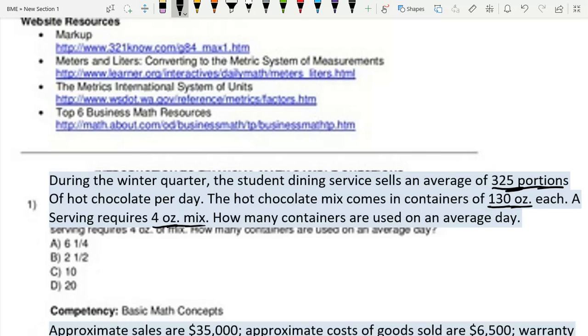Now back to the math. The hot chocolate mix comes in containers of 130 ounces each and a serving requires four ounces of mix. I don't really like the terminology they used here, but each serving is four ounces. Now there's 325 of these servings. The portion just refers to the serving in this case. So 325 times four.